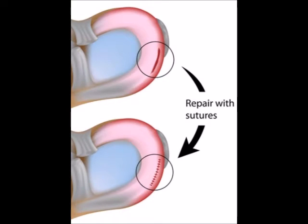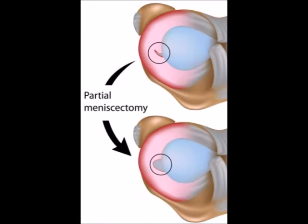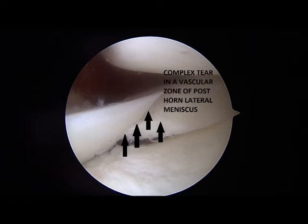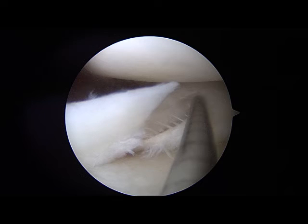Next, we'll focus on a partial meniscectomy. In contrast to a meniscus repair, a partial meniscectomy involves removing the torn, non-repairable meniscus tear fragments. This surgical picture shows a tear of the posterior horn of the lateral meniscus. The tear is in multiple planes. It is located within the avascular zone — that is the area that does not have good circulation.